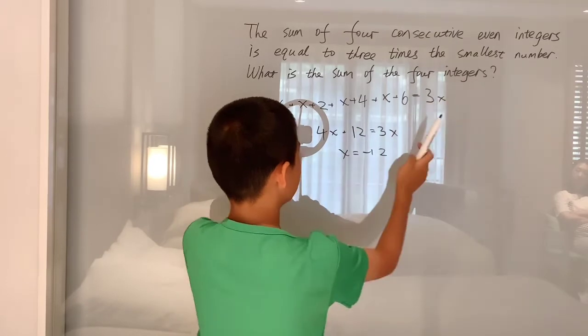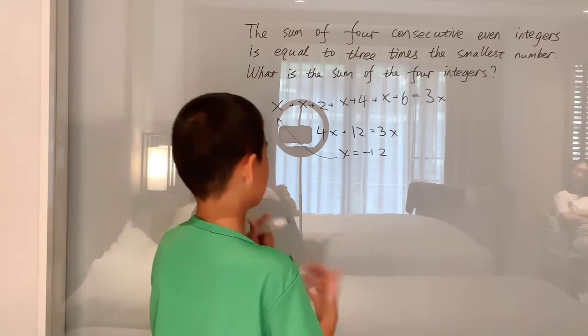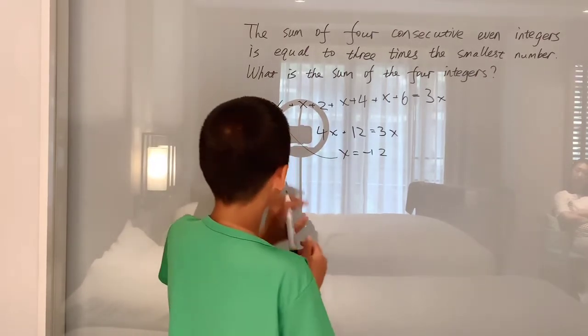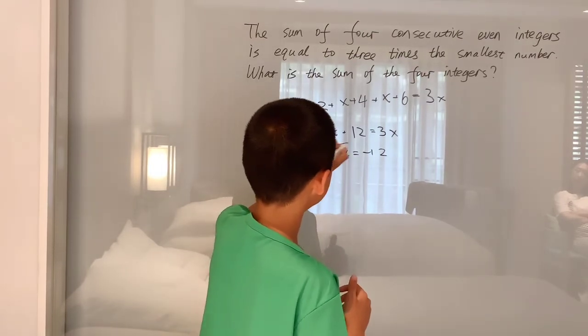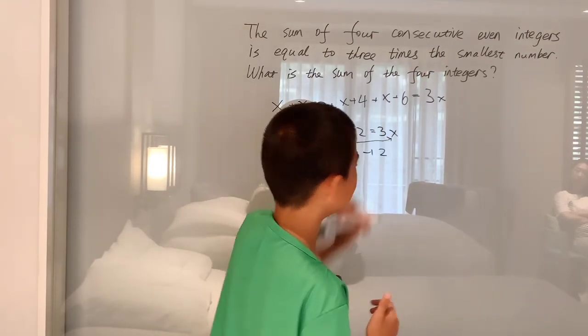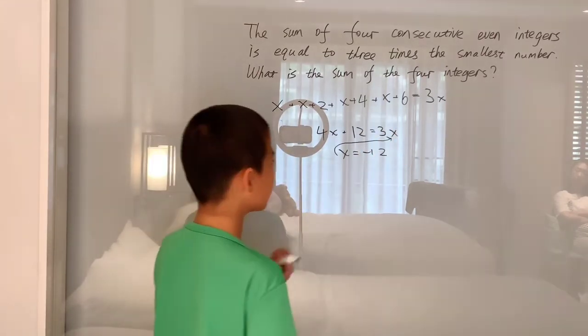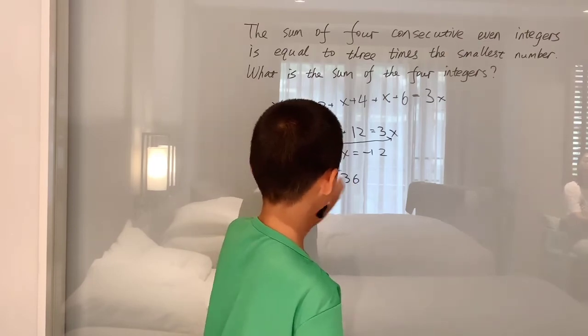Now we don't have to plug X in here and be like, 'Okay, negative 12 plus negative 12 plus 2...' We can just do something much simpler: take that X and plug it in right there. So now we just have three times X, and X is negative 12, so three times negative 12 is negative 36.